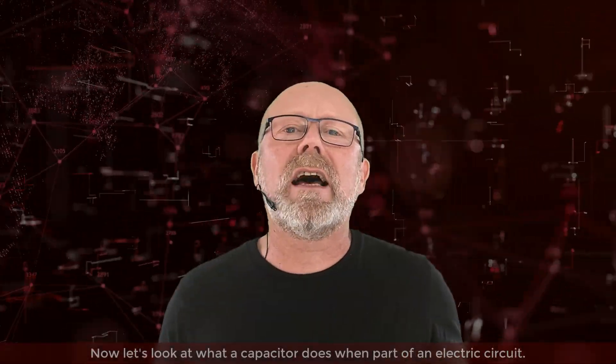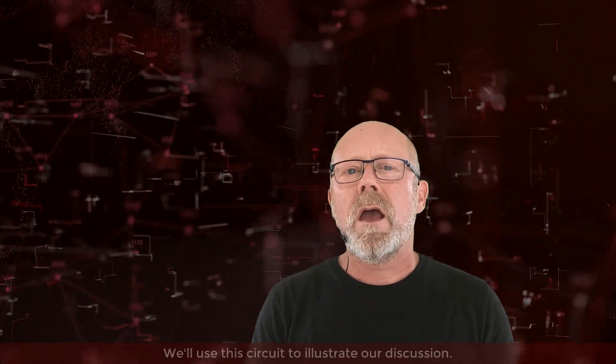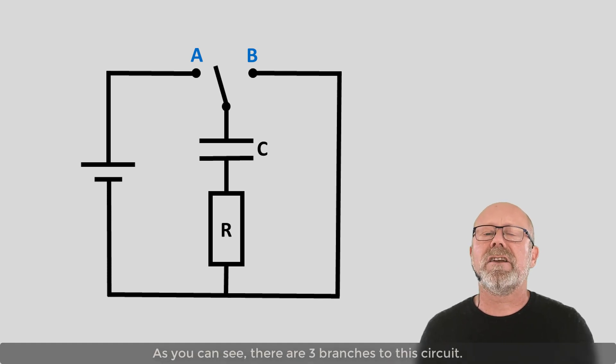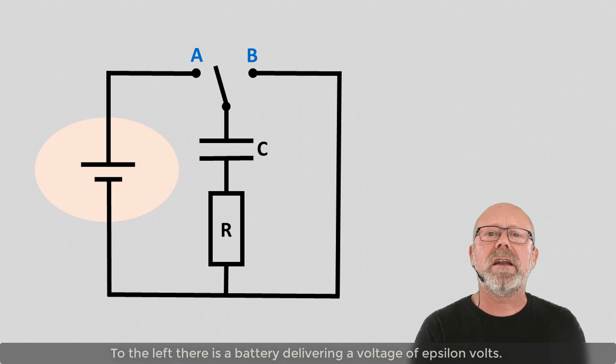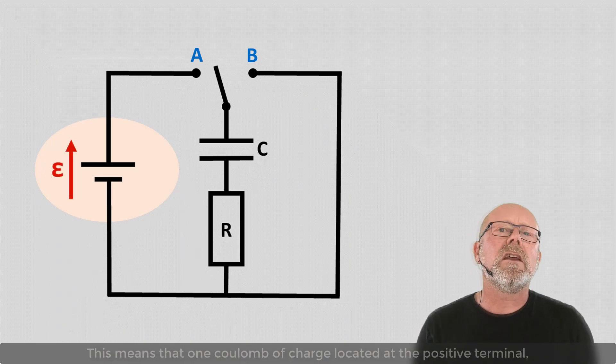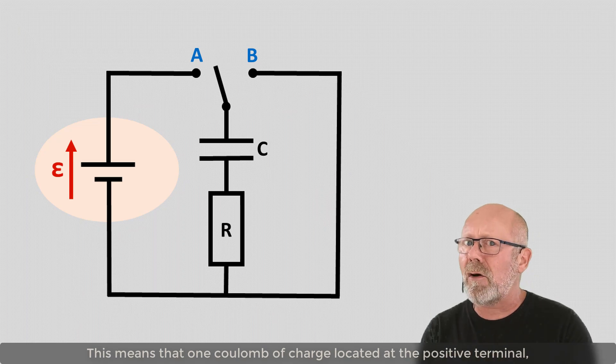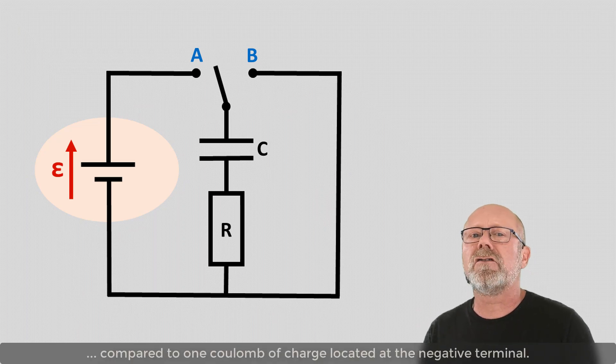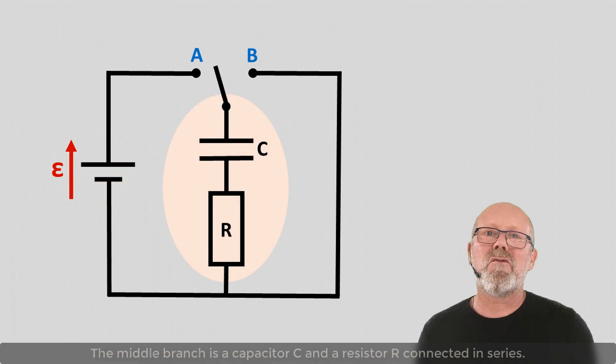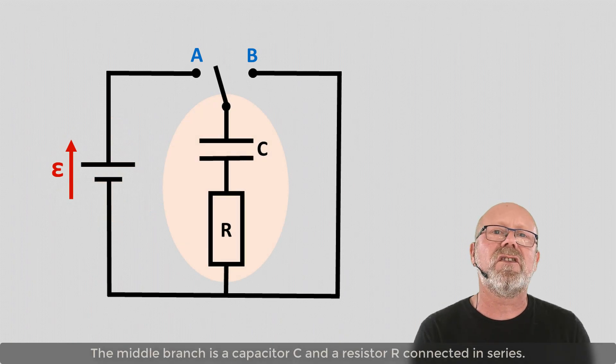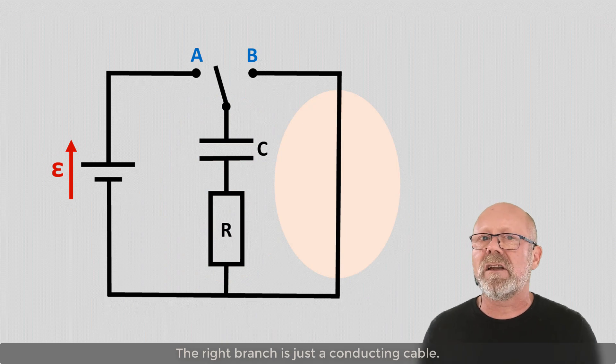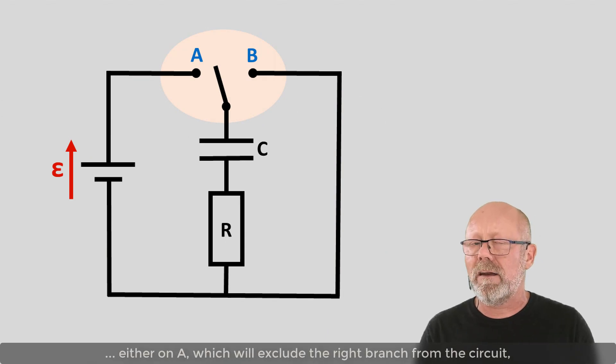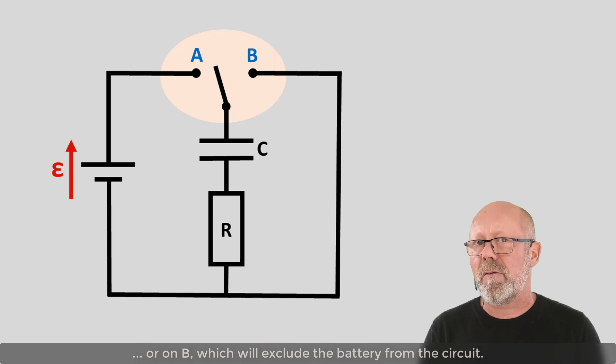Now let's look at what a capacitor does when part of an electric circuit. We'll use this circuit to illustrate our discussion. As you can see, there are three branches to this circuit. To the left, there is a battery delivering a voltage of epsilon volts. This means that one Coulomb of charge located at the positive terminal carries an excess of epsilon joules of energy compared to one Coulomb of charge located at the negative terminal. The middle branch is a capacitor C and a resistor R connected in series. The right branch is just a conducting cable. The three branches are connected to a flip switch that can be switched either on A, which will exclude the right branch from the circuit, or on B, which will exclude the battery from the circuit.